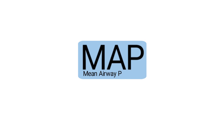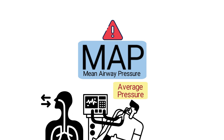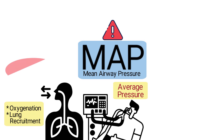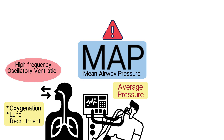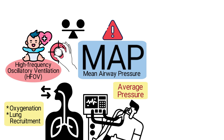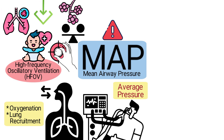Mean airway pressure is a critical parameter in mechanical ventilation. It reflects the average pressure in a patient's airway throughout the respiratory cycle and plays a vital role in oxygenation and lung recruitment. In high frequency oscillatory ventilation, especially for pediatric patients, precise control of this setting is essential to balance effective alveolar recruitment while minimizing the risk of lung injury.